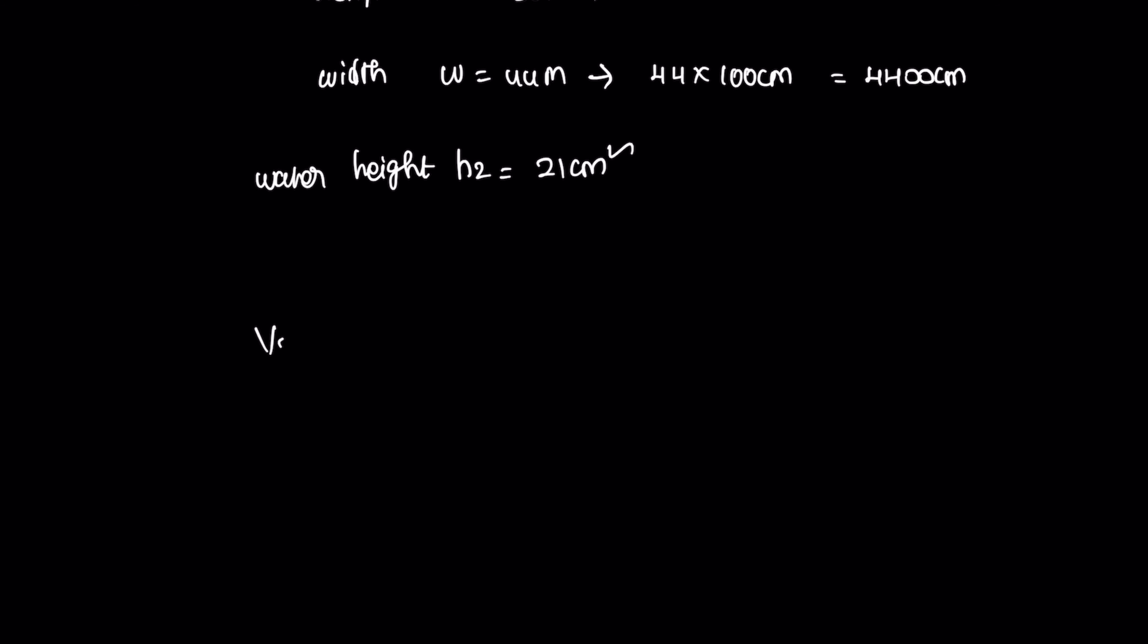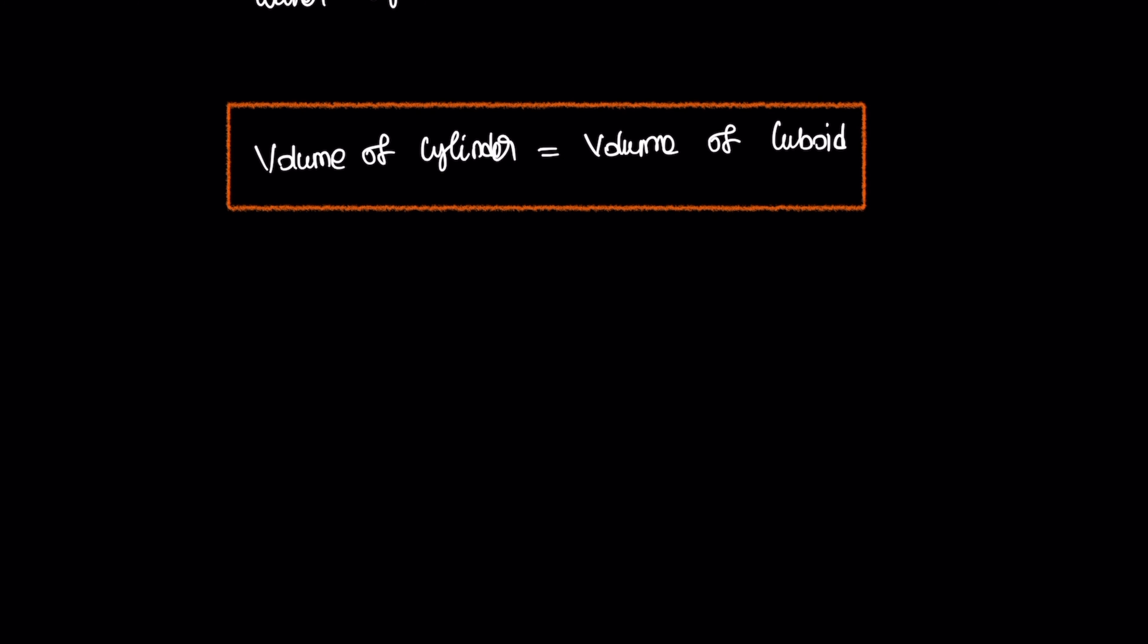The volume of cylinder is equal to volume of cuboid tank. The cylinder volume formula is π r² h. We use h1. The volume of cuboid is length into breadth into height.